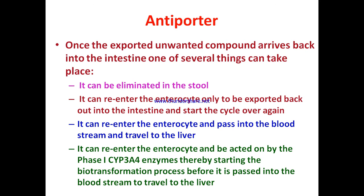Once exported back into the intestine, unwanted compounds have the following fates: they can be eliminated in the stool; or they can re-enter the enterocytes only to be exported back out into the intestinal lumen, cycling repeatedly; or they can enter the enterocytes, pass into the bloodstream, reach the liver, and undergo biotransformation; or they can re-enter enterocytes and be acted upon by the phase one CYP3A4 enzyme present in enterocytes, which initiates biotransformation before the intermediate passes into the bloodstream and travels to the liver.